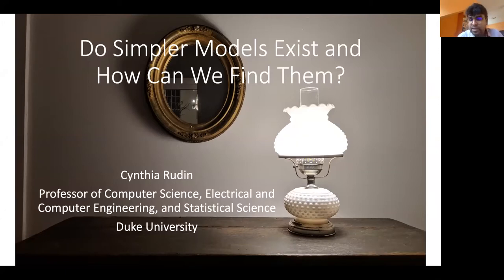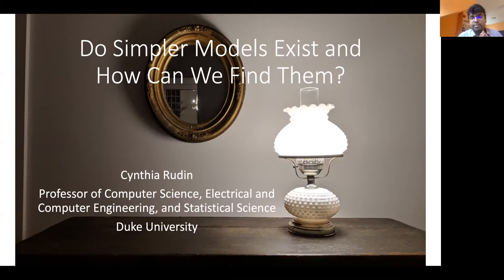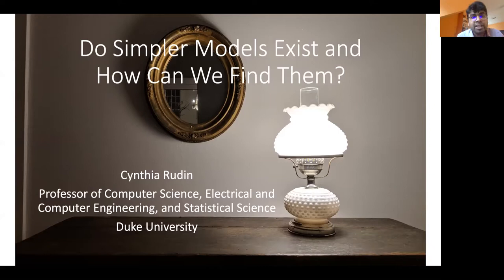She is a three-time winner of the INFORMS Innovative Application Analytics Award, and was named Top 40 Under 40. She was named one of the 12 most impressive professors at MIT in 2015. She has served on committees including INFORMS, National Academies, American Statistical Association, DARPA, and AAAI. She is a fellow of both the American Statistical Association and the Institute of Mathematical Statistics, and is currently a Thomas Langford lecturer at Duke University. Today she will talk about whether simpler models exist and how we can find them.